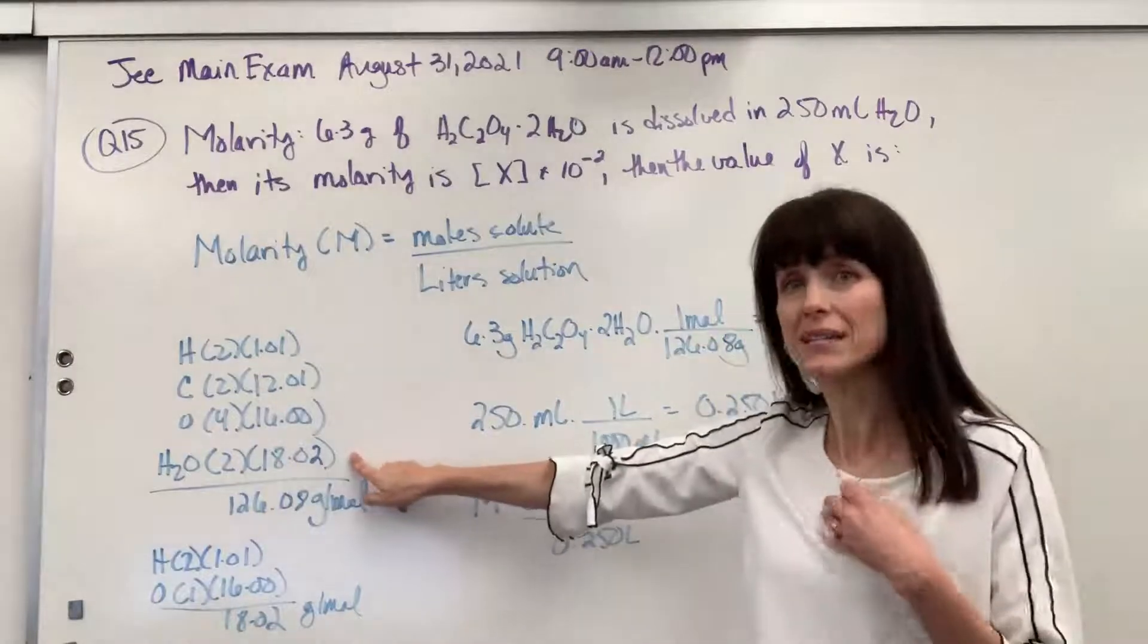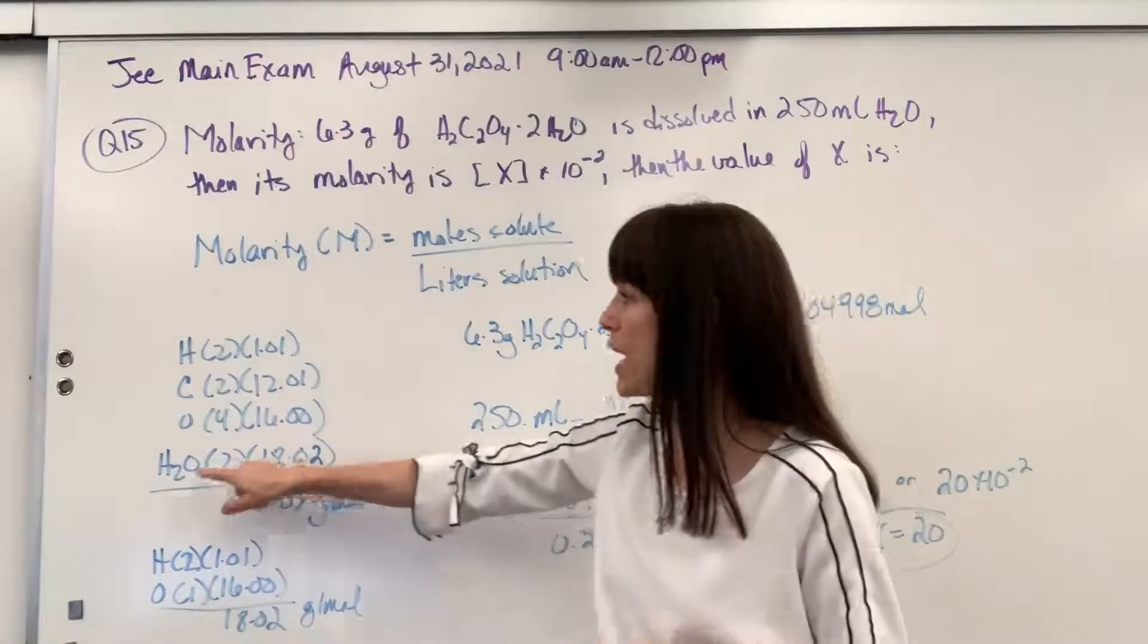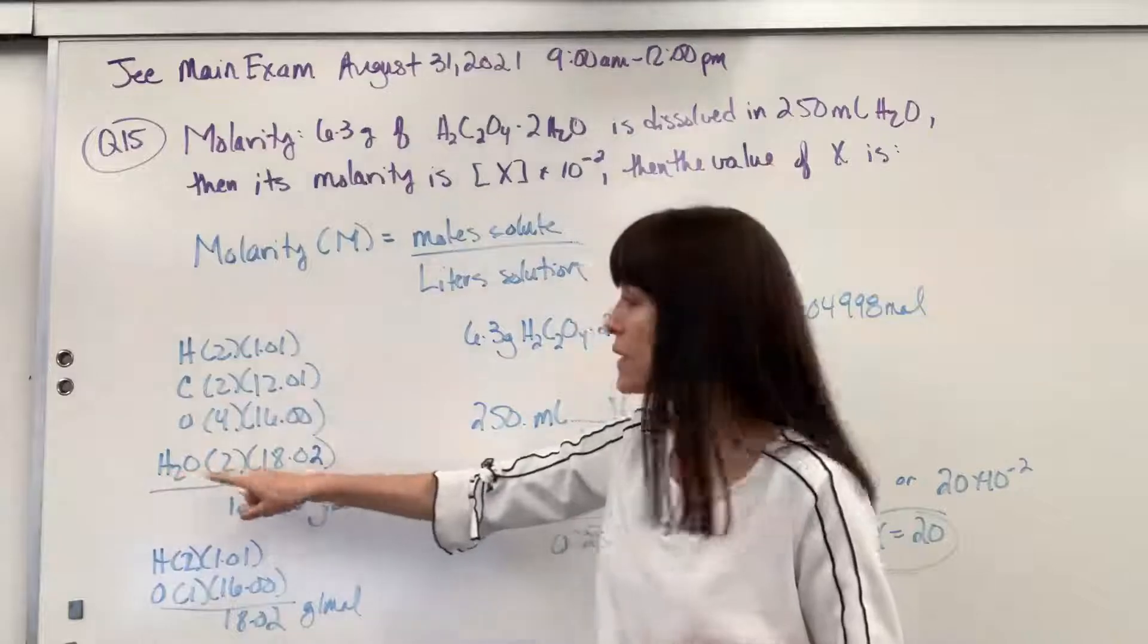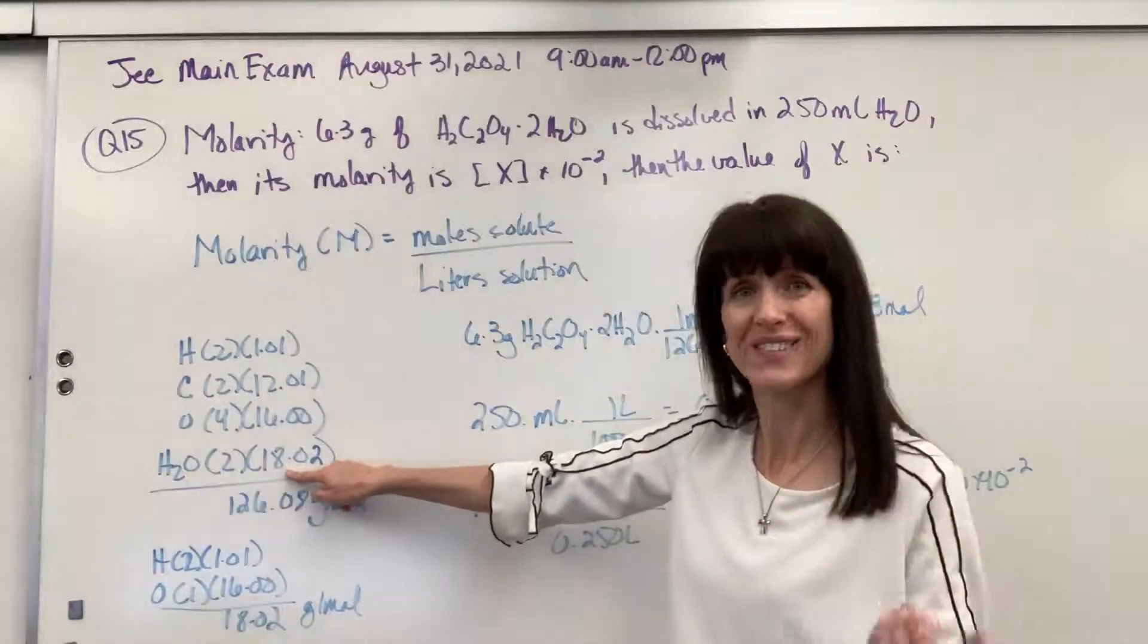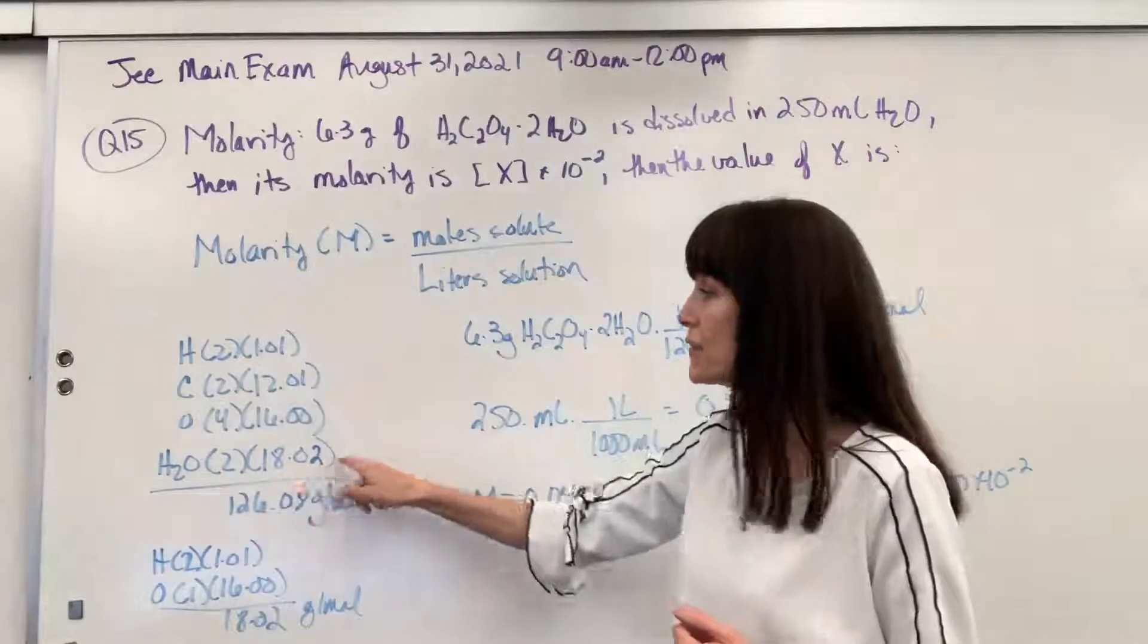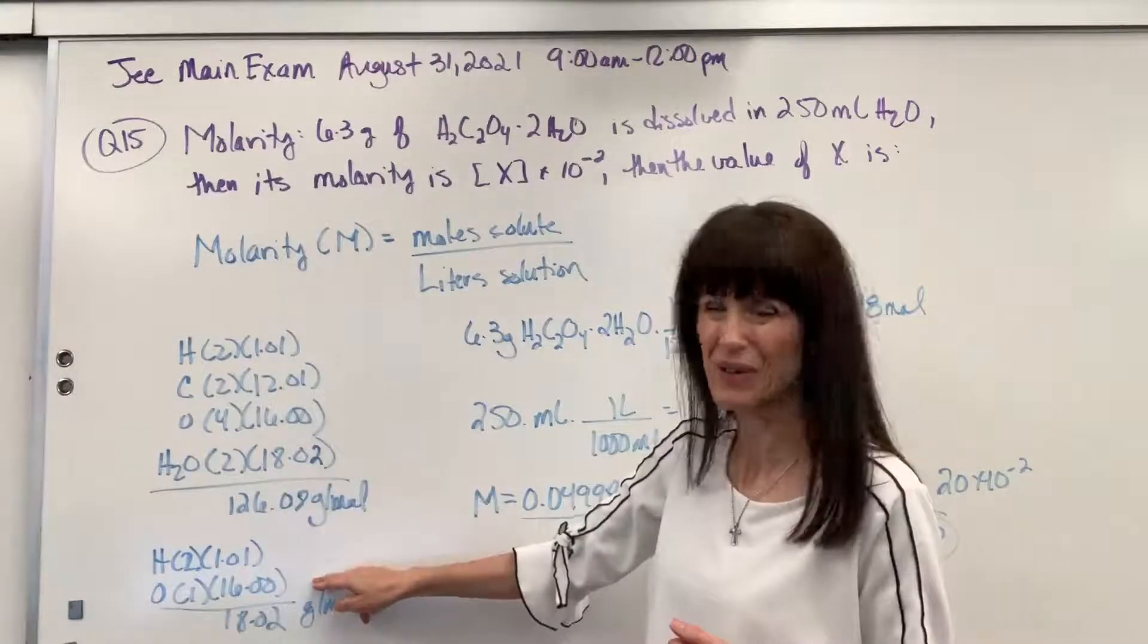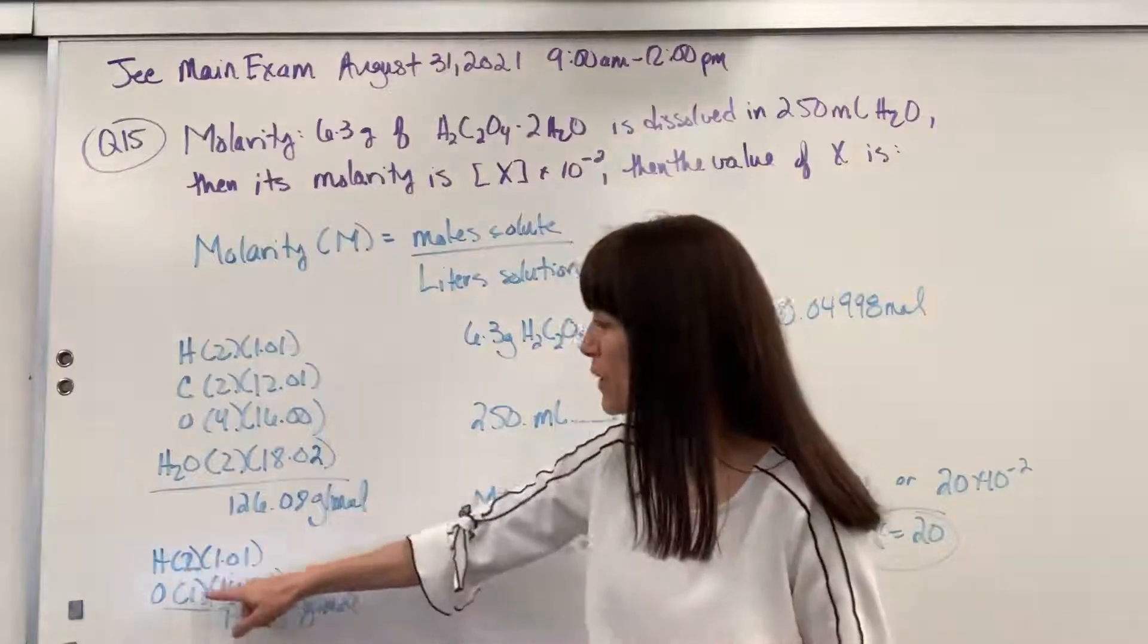So what I do, the easiest way for me to do molar mass of hydrates, I take the water, the number of those water molecules, and multiply it by the molar mass of water, which is 18.02. Now if you don't know how to get the molar mass of water, I did work it down here for you.